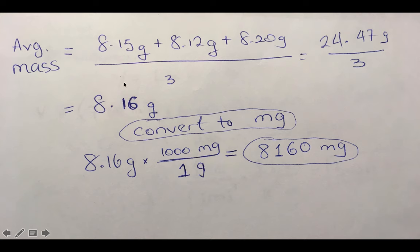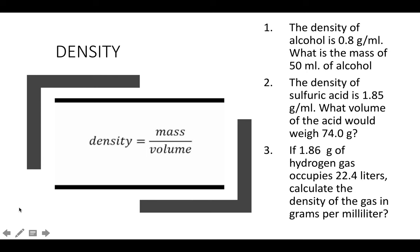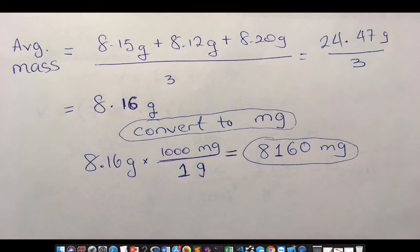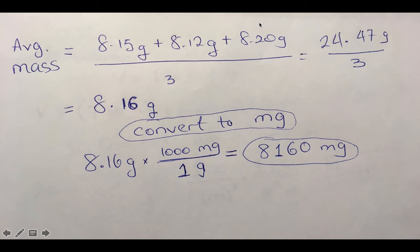So average mass is the first mass 8.15 plus the second one 8.12 plus the third one 8.20 divided by three.